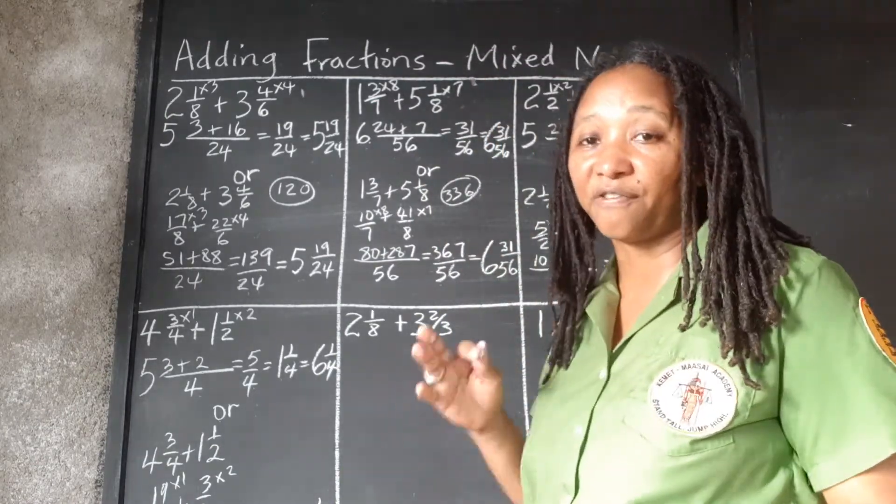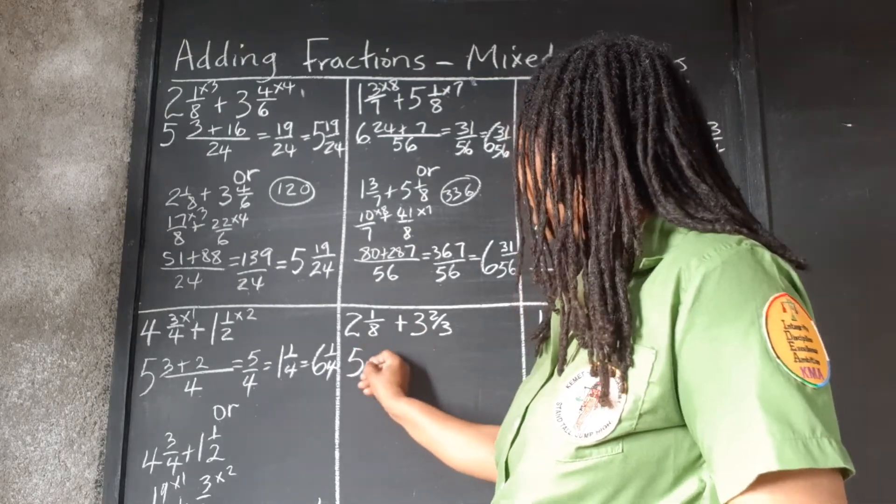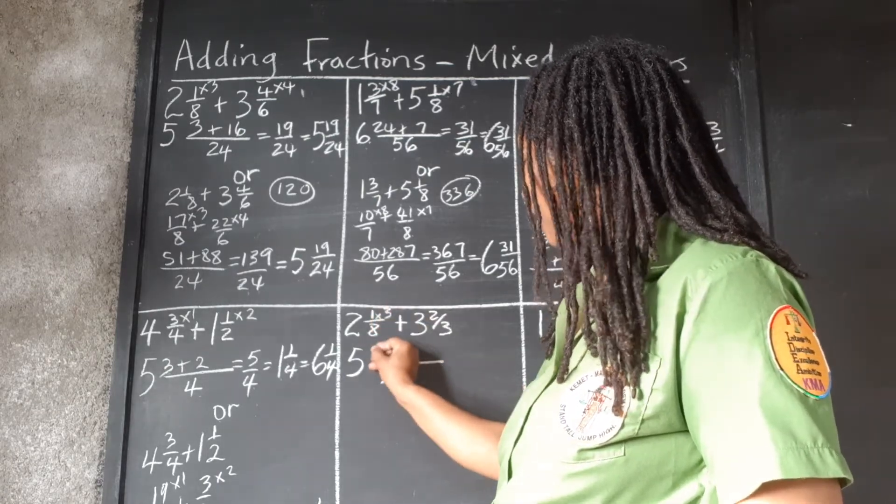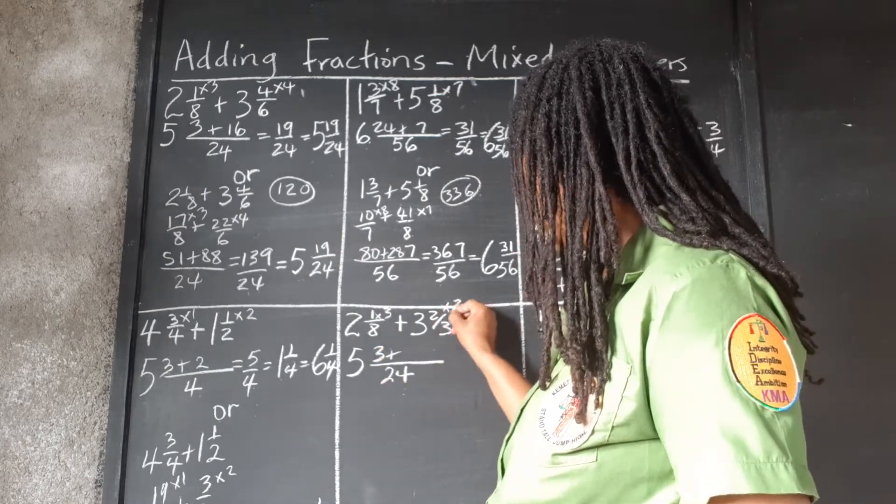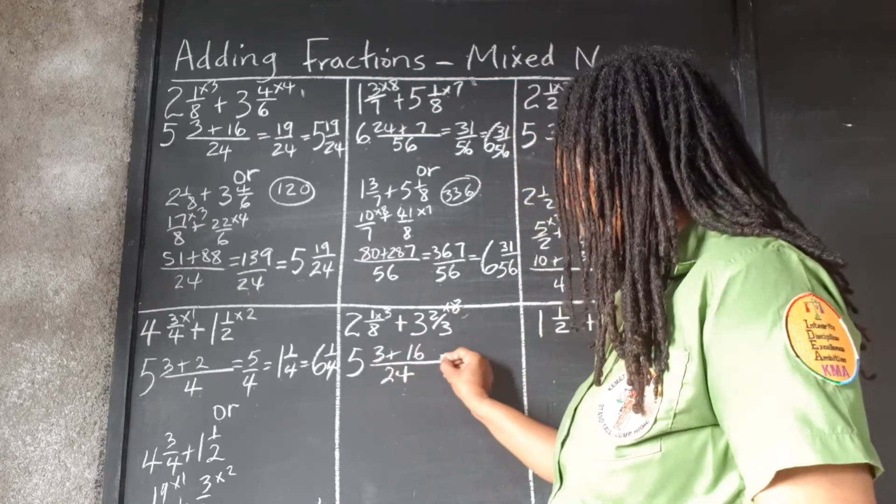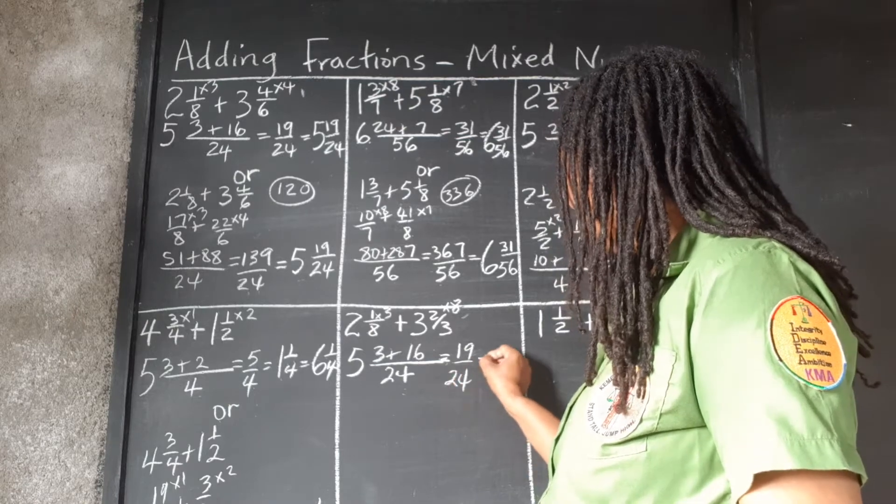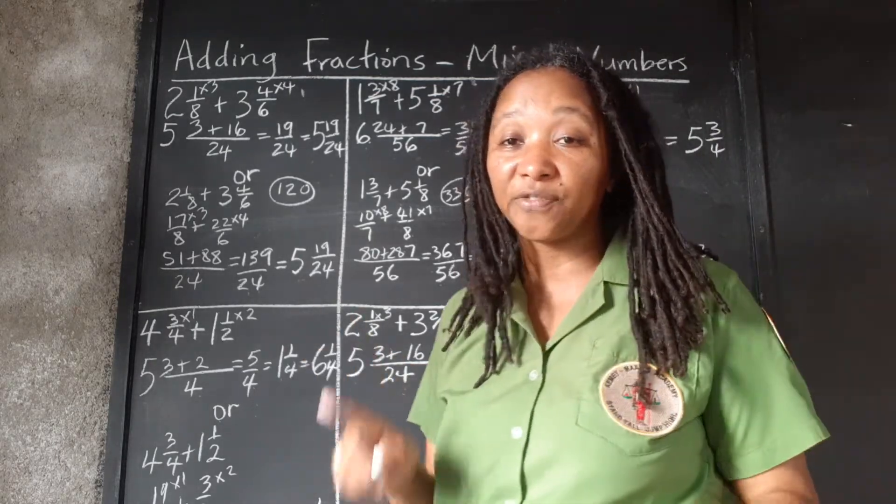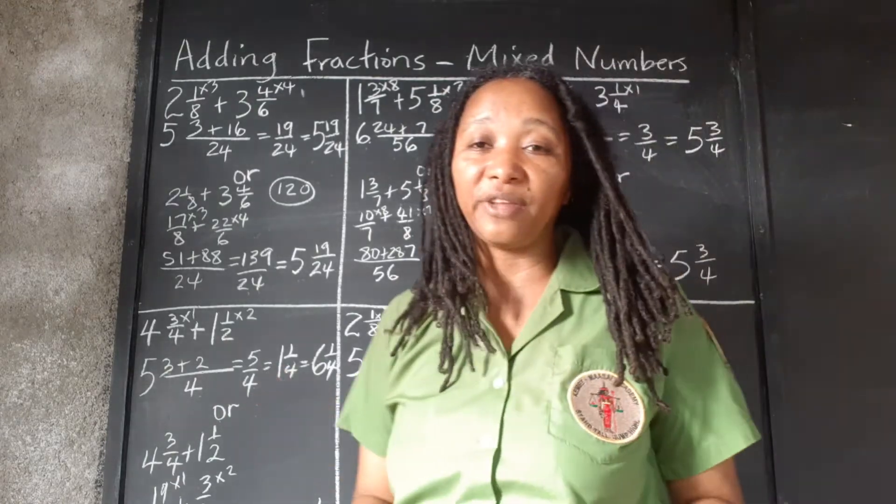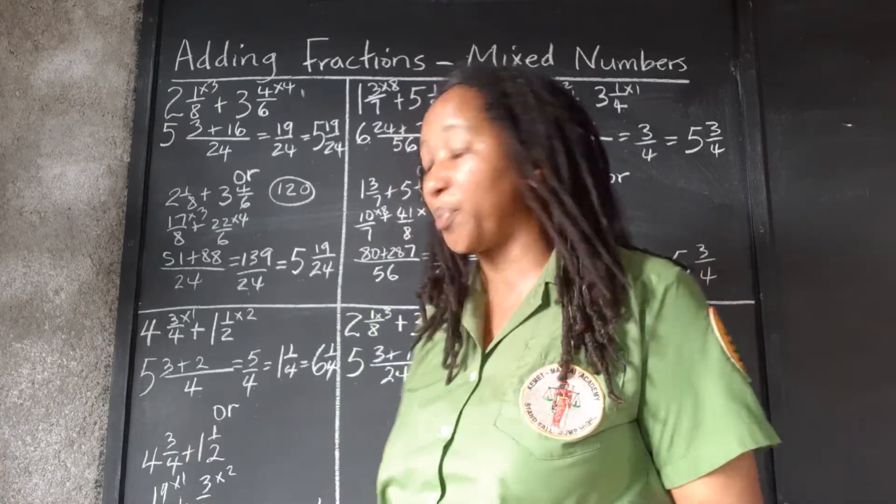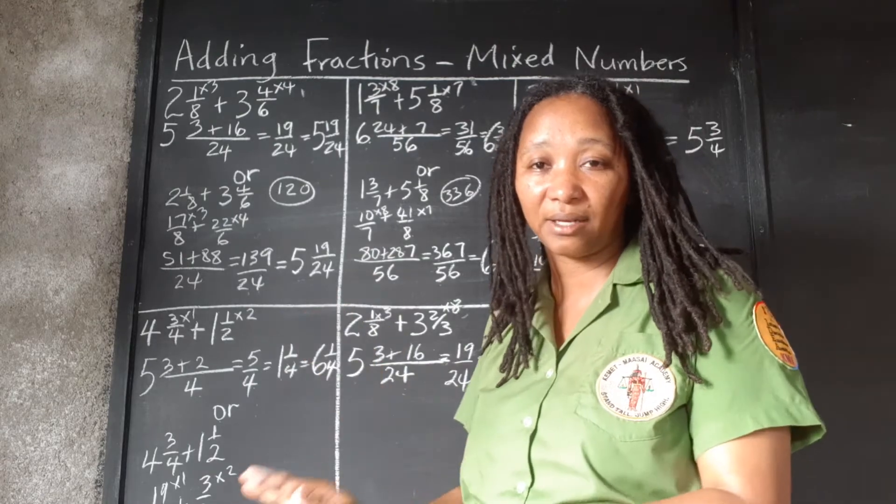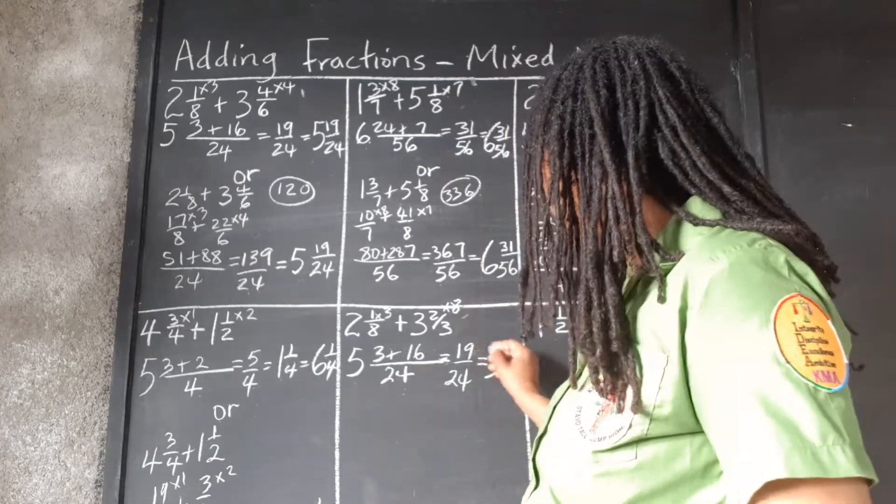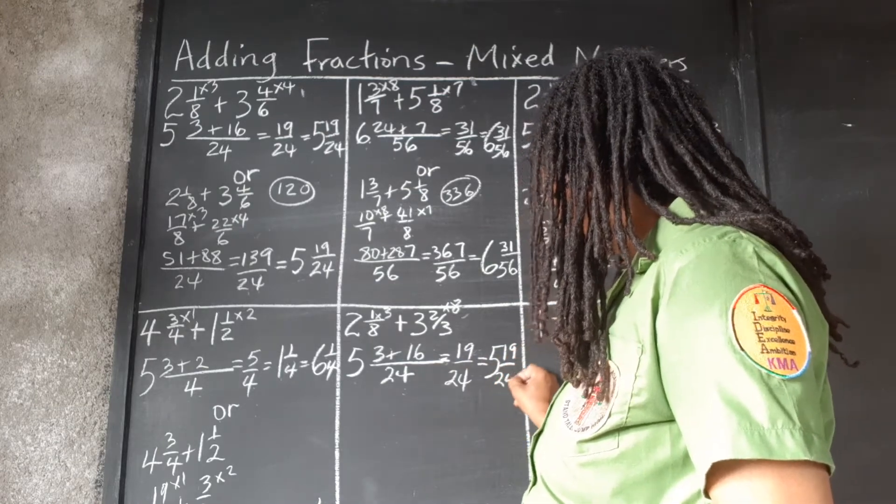LCM of 4 and 2 is 4. 4 goes into 4 one time. 19 times 1 is 19. 2 goes into 4 two times. 3 times 2 is 6. 19 plus 6 is 25 over 4. And 4 goes into 25 6 times, remainder 1 over 4. So you see, we got back over 6¼. Different routes, same destination. Here we go now. We're going to work the first method. 2 plus 3 gets 5.